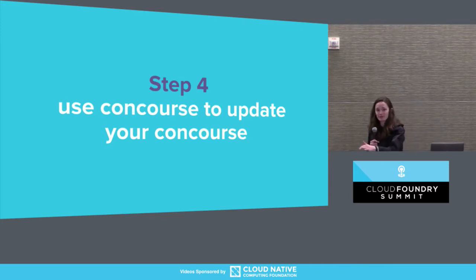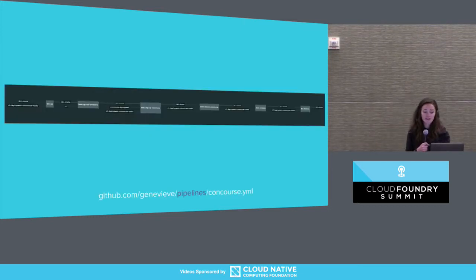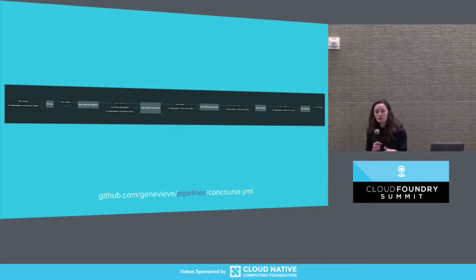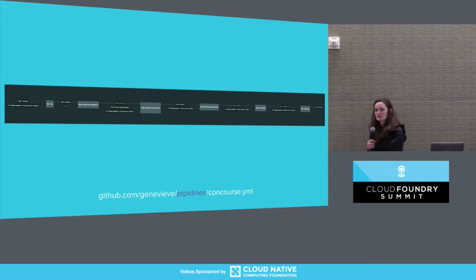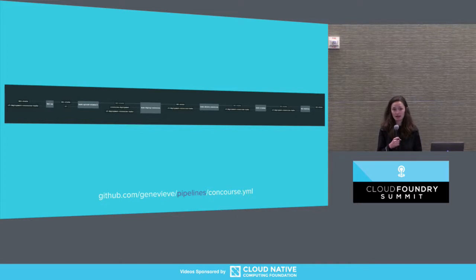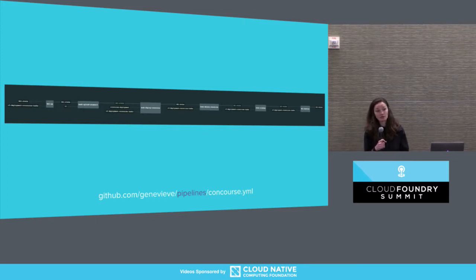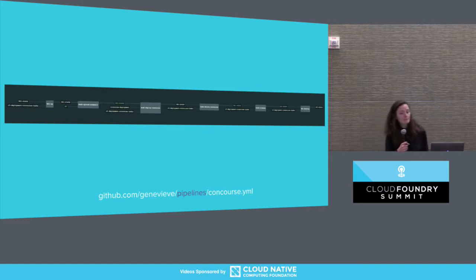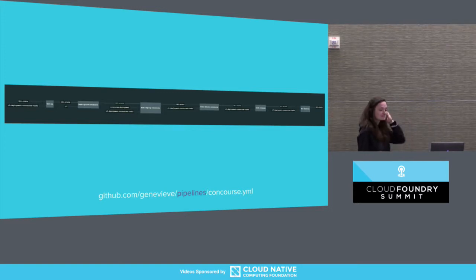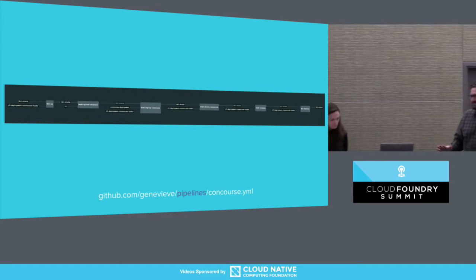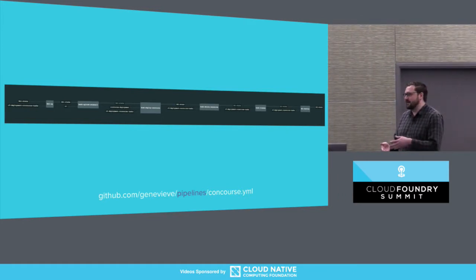Using Concourse to update Concourse is kind of complicated to wire up — you need to get the BBL environment from your workstation into the Concourse deployment itself. But it would look something like this: the first thing you'll want to do is persist the BBL state directory from your local machine to a secure location, and that will be the input to this pipeline. The pipeline goes through the same stages: `bbl up`, which will do updates to that director, jumpbox, or network configuration, and then a deployment for your Concourse, updating to the latest release of Concourse, UAA, Credhub, and so on.